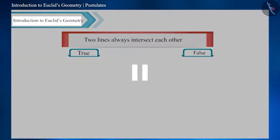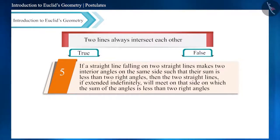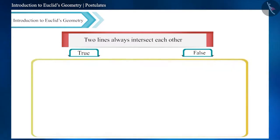The fifth postulate of Euclid says that if a straight line falling on two straight lines makes the interior angles on the same side of it.